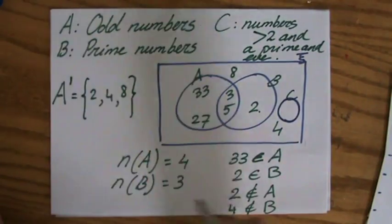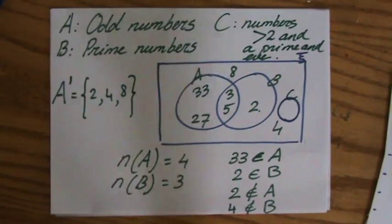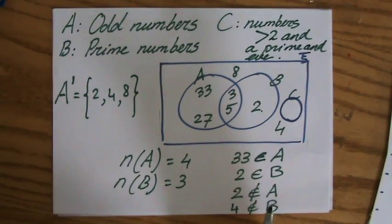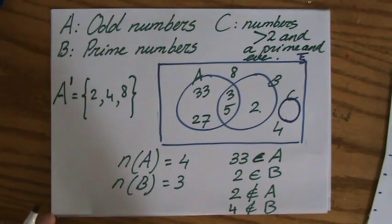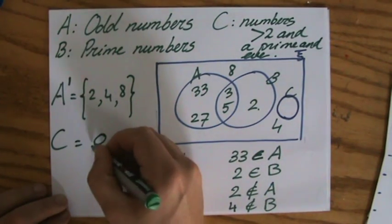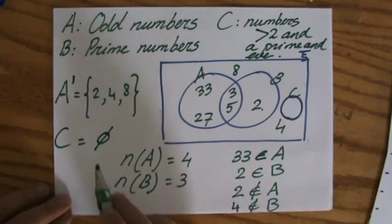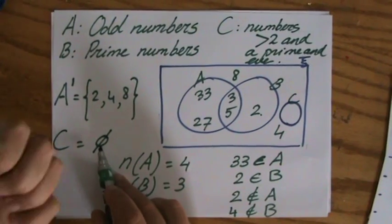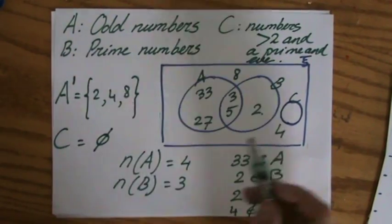And C is empty. There's nothing inside. Why? Because there are not even numbers bigger than two which are also a prime. And then the notation for that is C is empty. That means that there is no element in set C. It is empty.